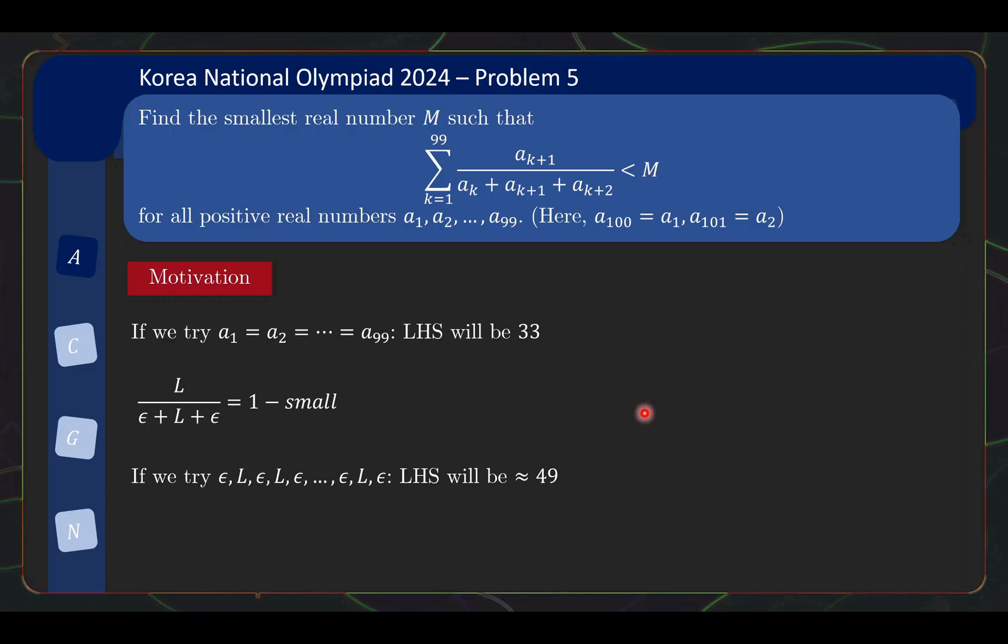So this suggests that if we do it like this, the left hand side would be very close to 49. We don't know whether it's bigger or smaller or exactly 49, but it is a number that's around 49. So it suggests that m might be maybe 49 or larger.